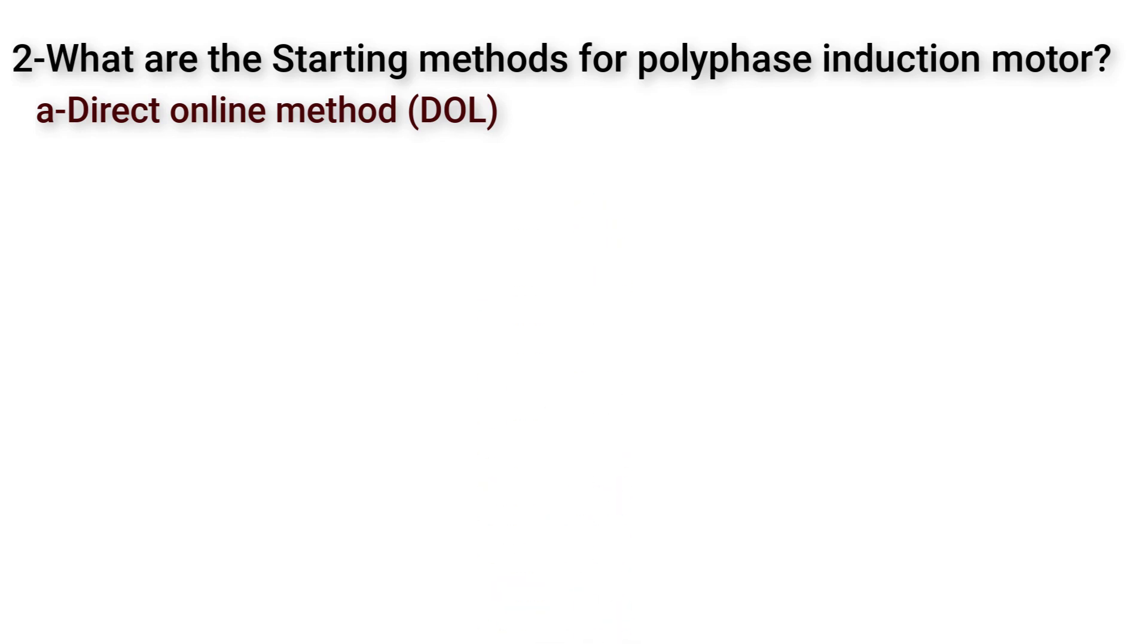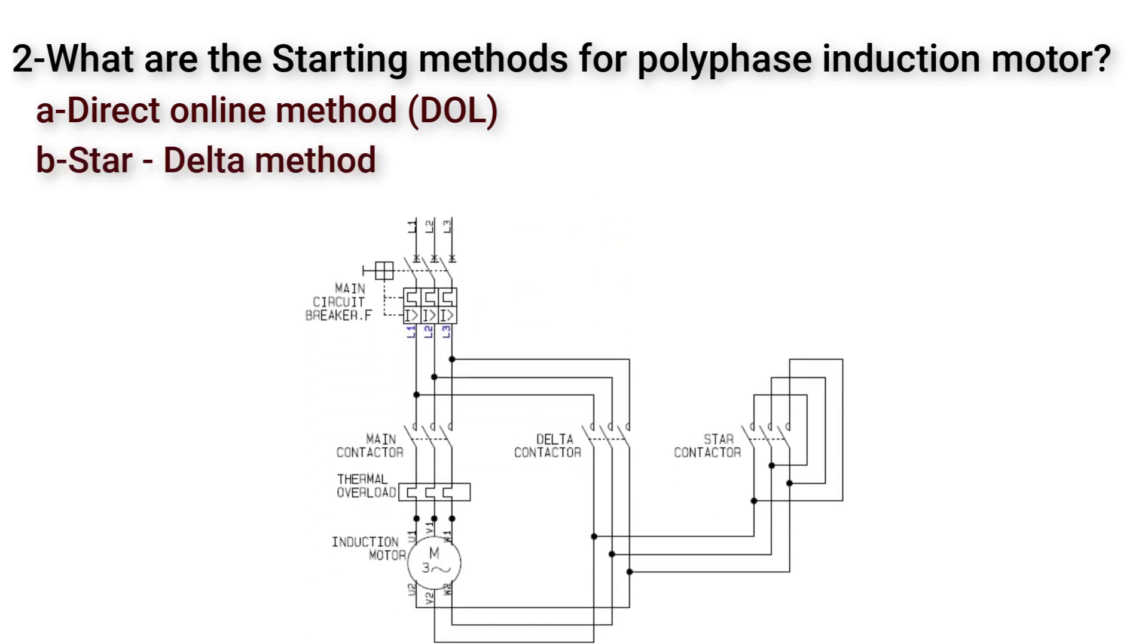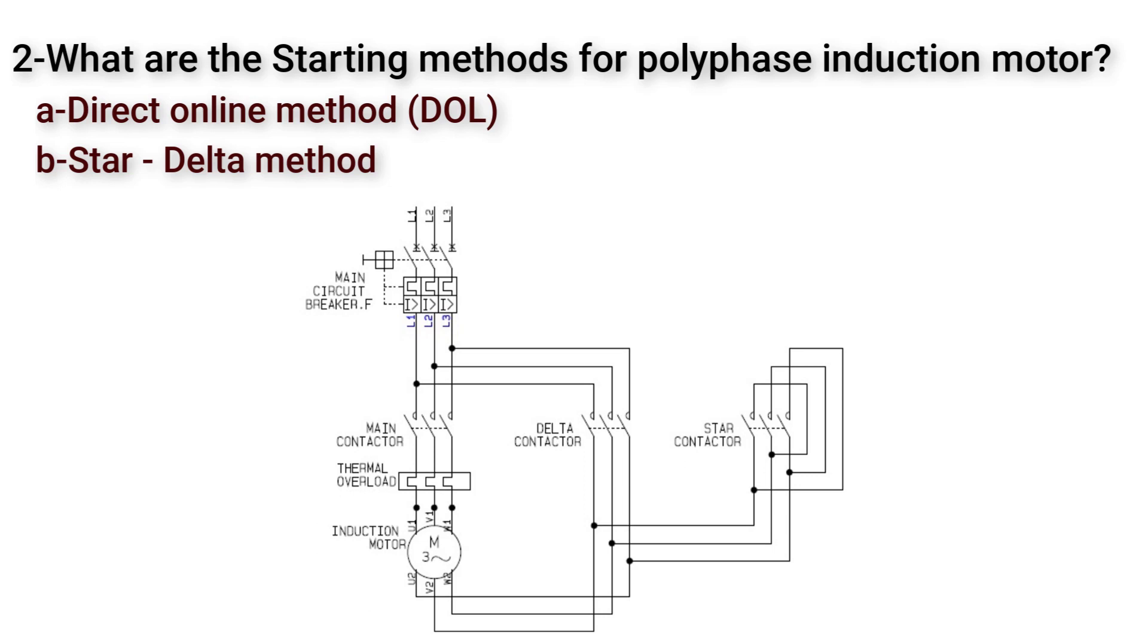Second method is star-delta method. Here we use contactors to start the motor in star connection which will reduce the inrush current. After starting, the contactors automatically change the connection of motor to delta connection. Note that this method is used for motors designed to operate in delta connected winding.